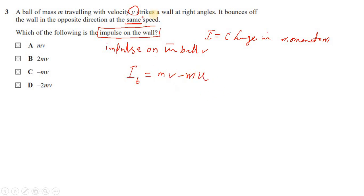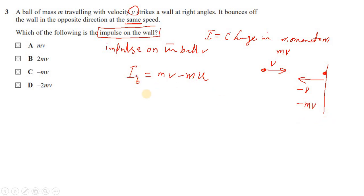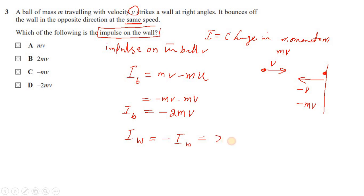Taking rightward as positive, the ball travels toward the wall with velocity +V and bounces back with velocity −V. Initial momentum is +mV, final momentum is −mV, so impulse on the ball = −mV − mV = −2mV. By Newton's third law, impulse on the wall is the negative of this, which is +2mV. So the answer is option B.